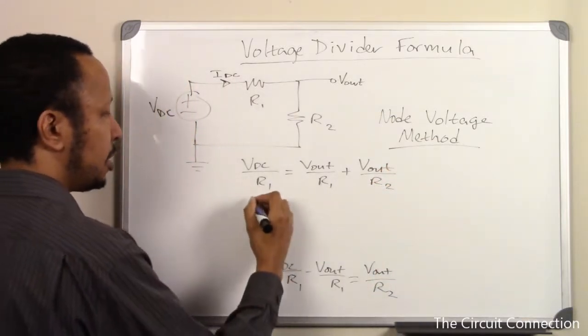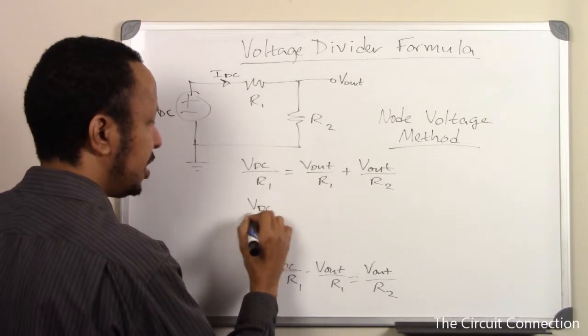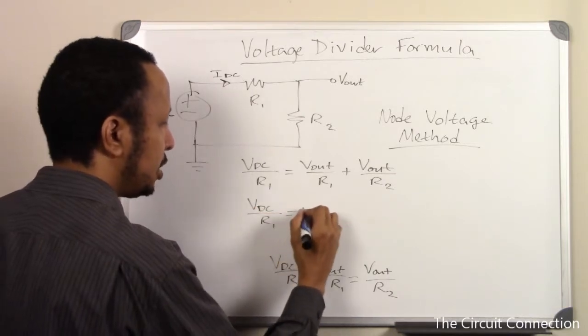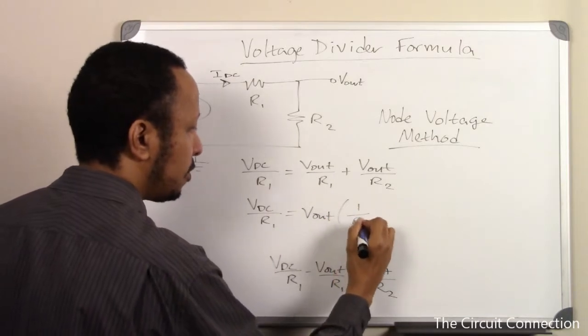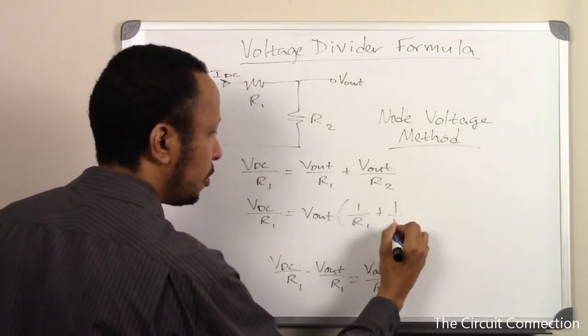Next we're going to collect and group things together. VDC over R1 equals Vout times 1 over R1 plus 1 over R2.